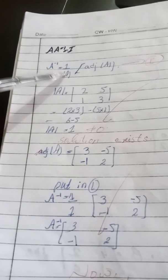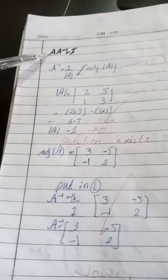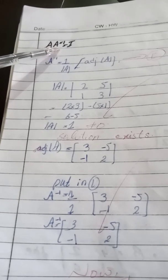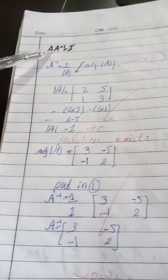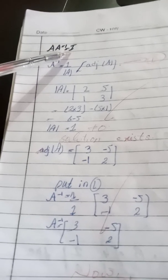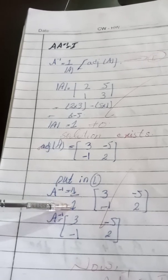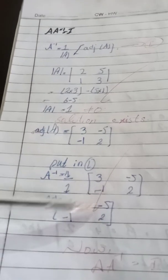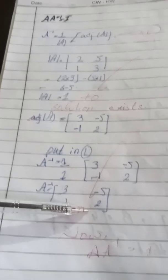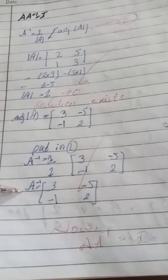Now we have calculated the determinant of A and the adjoint of A. Putting these values into the formula, A inverse equals 1 upon the determinant of A multiplied by the adjoint of A. So A inverse is [3, -5, -1, 2]. We have now calculated the multiplicative inverse.